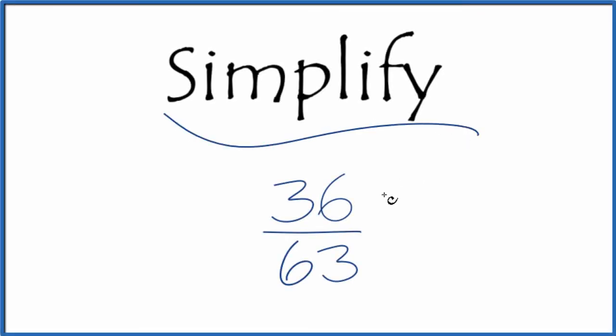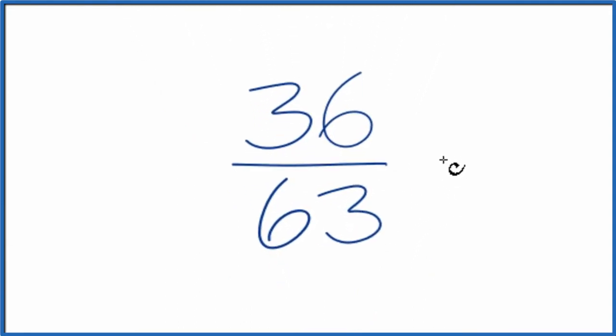If you need to simplify the fraction 36/63, here's how you do it. We want to find another fraction that's equivalent—it has the same value as 36 over 63, it's just in lowest terms. So we need to find common factors for 36 and 63.